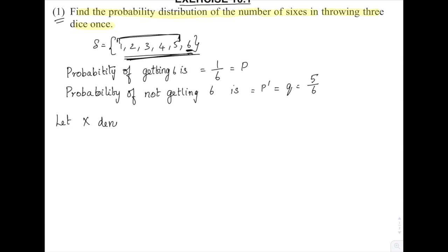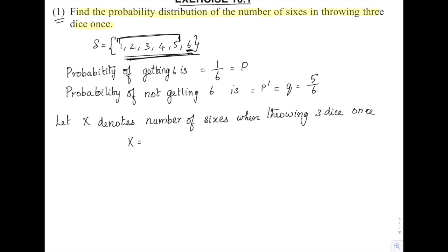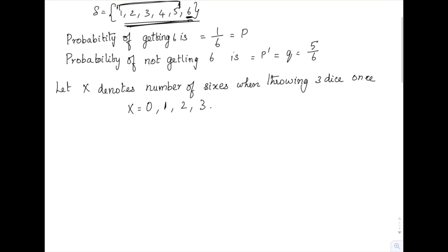Let X denote the number of sixes when throwing three dice at once. Either there can be no sixes at all, so X = 0; or only one six, X = 1; or two sixes, X = 2; or all three can be a six, X = 3. These are the four possibilities.